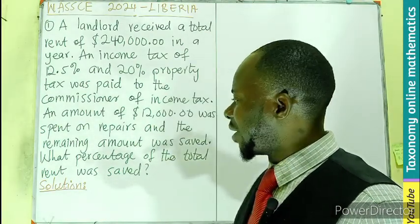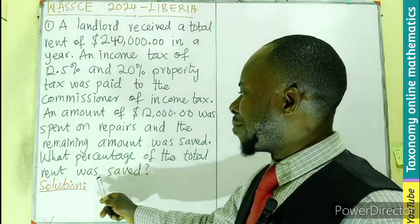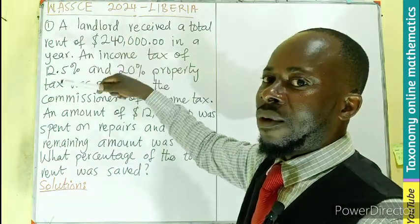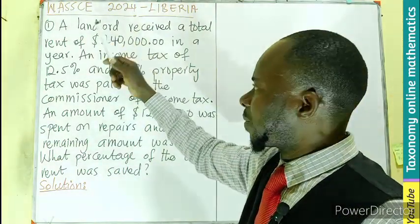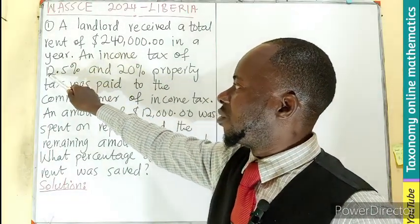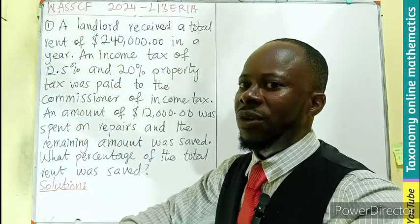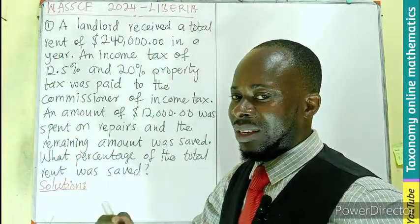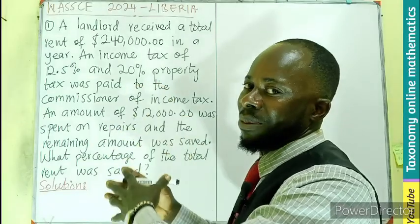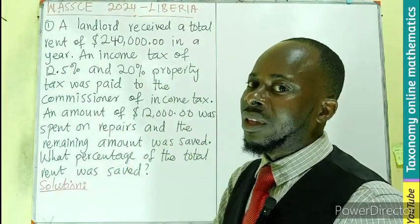To find the percentage, we need to know the amount that was saved from $240,000 after paying these taxes. That's 12.5% of the total, which simply means 12.5% times $240,000.